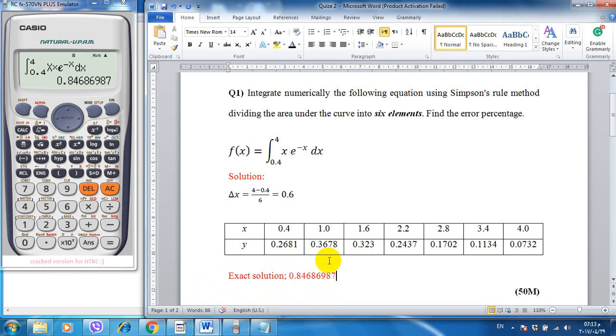So we can solve this equation numerically by hand, but we got a short time to find the value of f of x at each interval from 0.4 to 4, from lower limit to upper limit. And then we can compare the numerical result with the exact solution and find the error percentage.